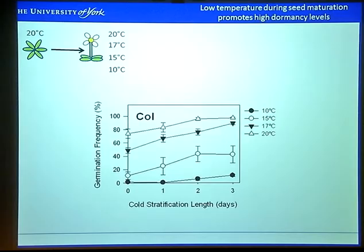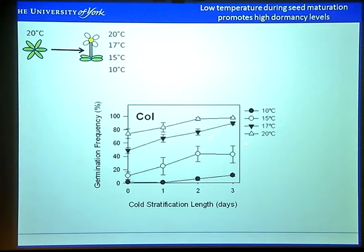We're interested in how temperature can regulate dormancy. This shows a typical experiment that we do in Arabidopsis. We grow plants during the vegetative phase at a warm temperature — in this case, 20 degrees — and then when the plants start to flower, at the first anthesis, we switch them to a different temperature. Here I'm showing data for when plants were matured at 10, 15, 17 and 20 degrees. By lowering the temperature, this induces an incremental increase in dormancy levels.